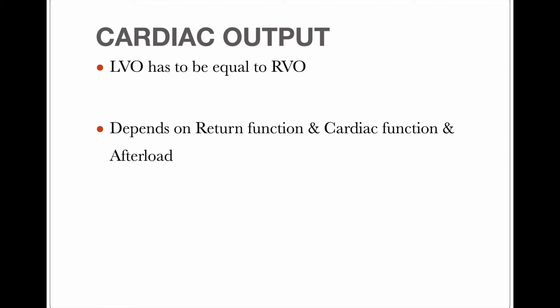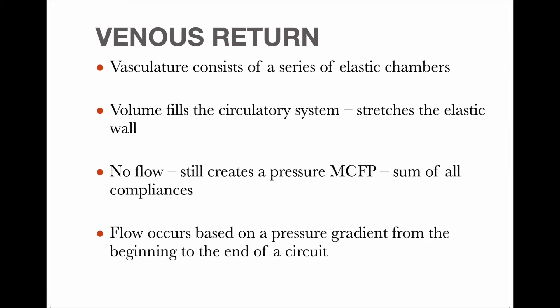If the return function is good, a good volume of blood comes to the right heart. If right ventricular function is good, a good amount of blood goes into the lungs and then to the left side. If afterload is very high, output will be low; if afterload is good, output will be good. Now coming to venous return: the vasculature consists of a series of elastic chambers — our veins — from the lower limb, upper limb, and head.